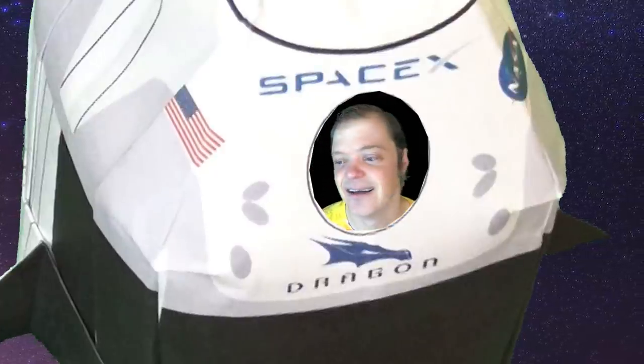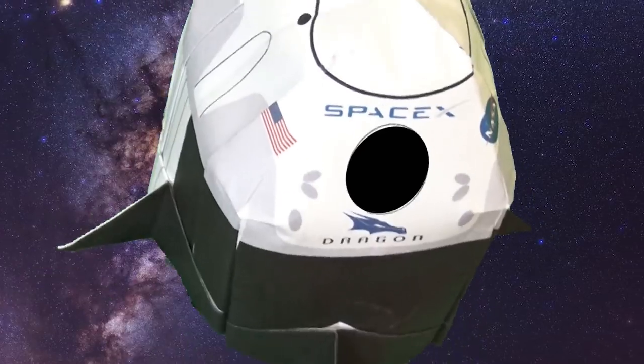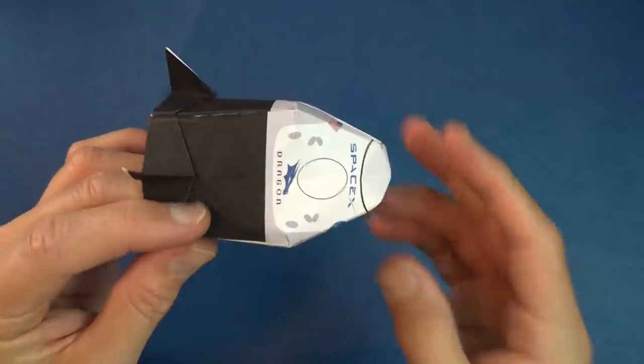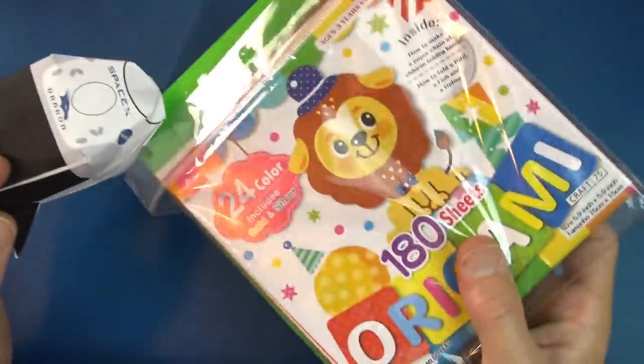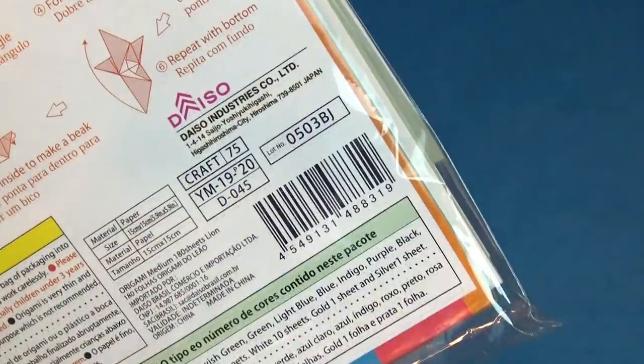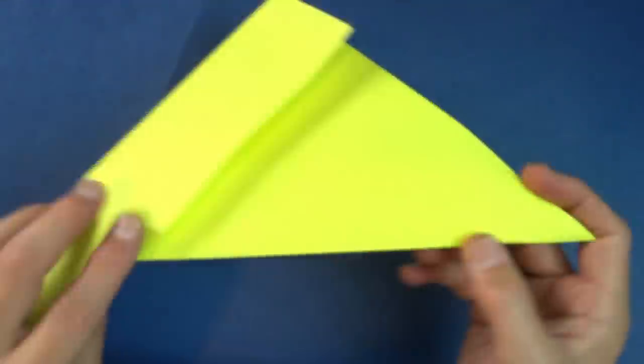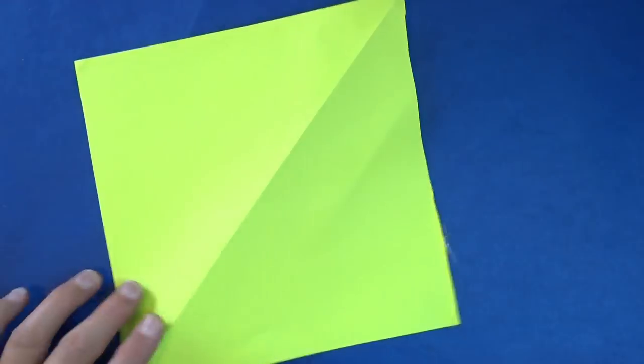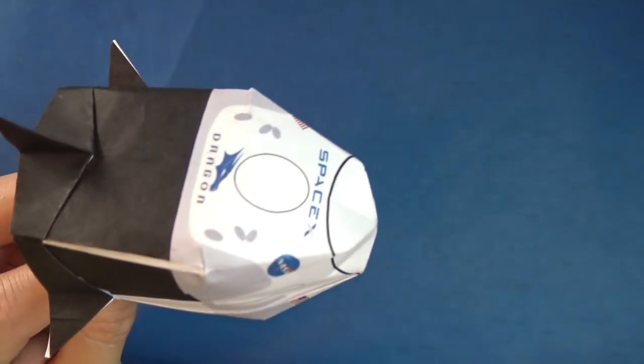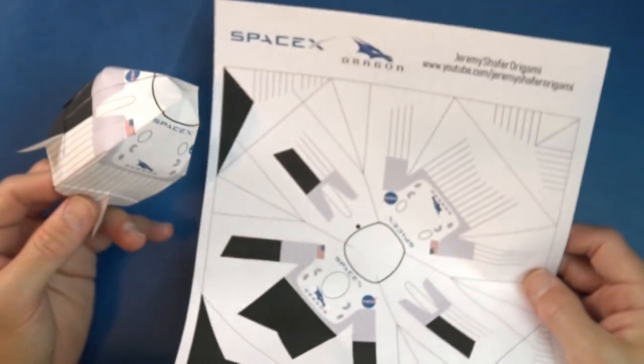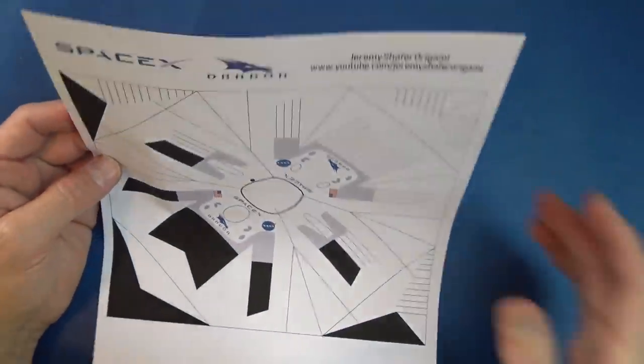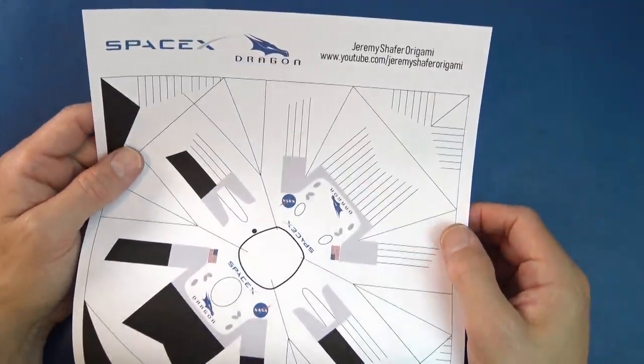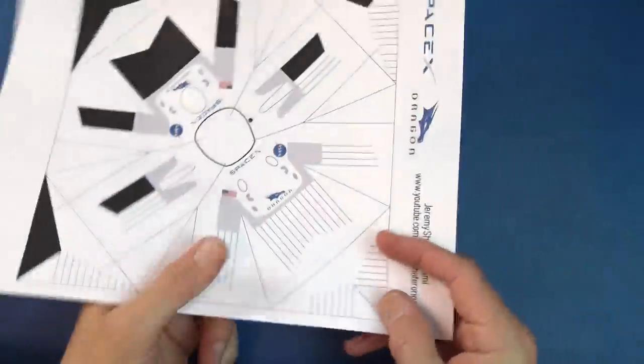Ready, set, here goes. Alright, so to fold this Dragon Endeavor, you need a square sheet of paper. And you could use a square of Kami, in which case it'll come out looking like this. Or you could use a sheet of printer paper, cut square. But if you want a Dragon Endeavor like this, I have a template sold on my website for $2 or free for members of Jeremy Schaefer Origami. For details, check the video description on that. And that's what I'm going to use for this tutorial.